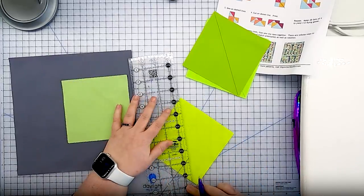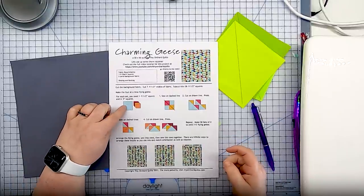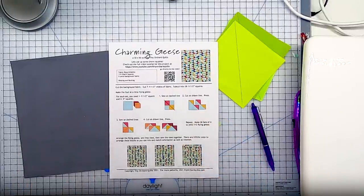and just giving them a little tap with the iron. Whatever marking method you would like to use. These small squares will end up being the outer wings of our flying geese where the large square is the aqua square in our pattern and it will end up being that larger triangle in the center.